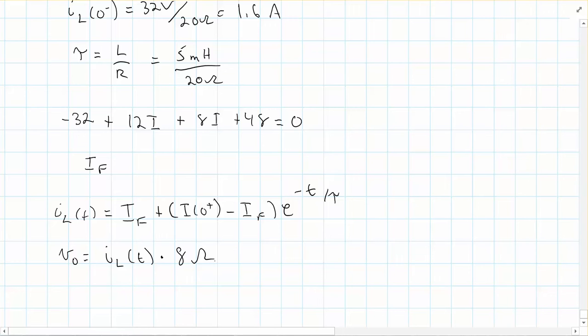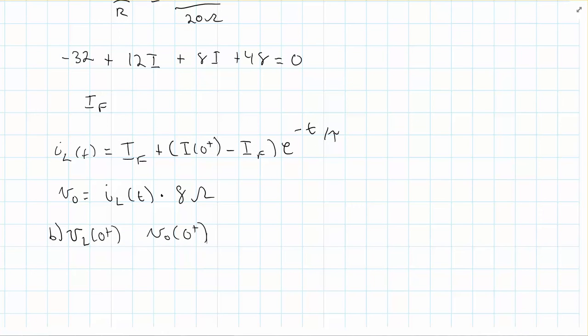And then for part B, it's asking you to find the values for VL at 0 plus and Vout at 0 plus. Well, Vout at 0 plus, you can just use this equation right here to determine what Vout at 0 plus is.